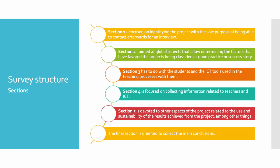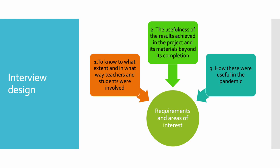The second step for the analysis was a survey, built upon previously analyzed articles. The survey is divided into six sections regarding the main factors that could help classify projects as good practices, the use of ICT in those projects, and their sustainability over time until today.